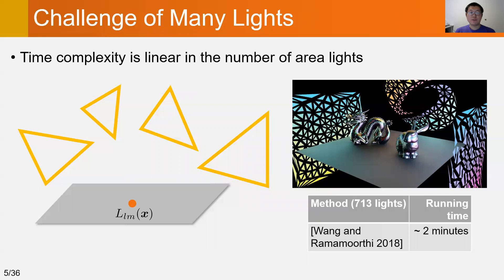For example, rendering this scene with more than 700 lights takes about 2 minutes using the previous method.